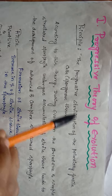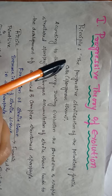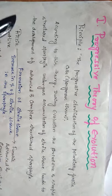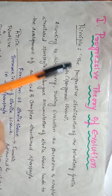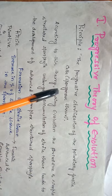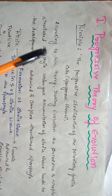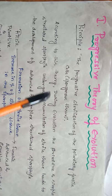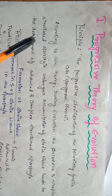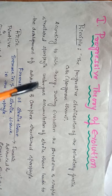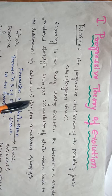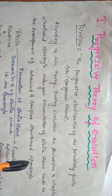Progressive theory of evolution, also called the progressive sterilization theory of evolution. The principle of this theory is the progressive sterilization of potentially fertile cells. According to this theory, during evolution, the primitive and simple structured sporophyte undergoes accumulation of sterile tissue, leading to the development of an advanced and complex structured sporophyte.